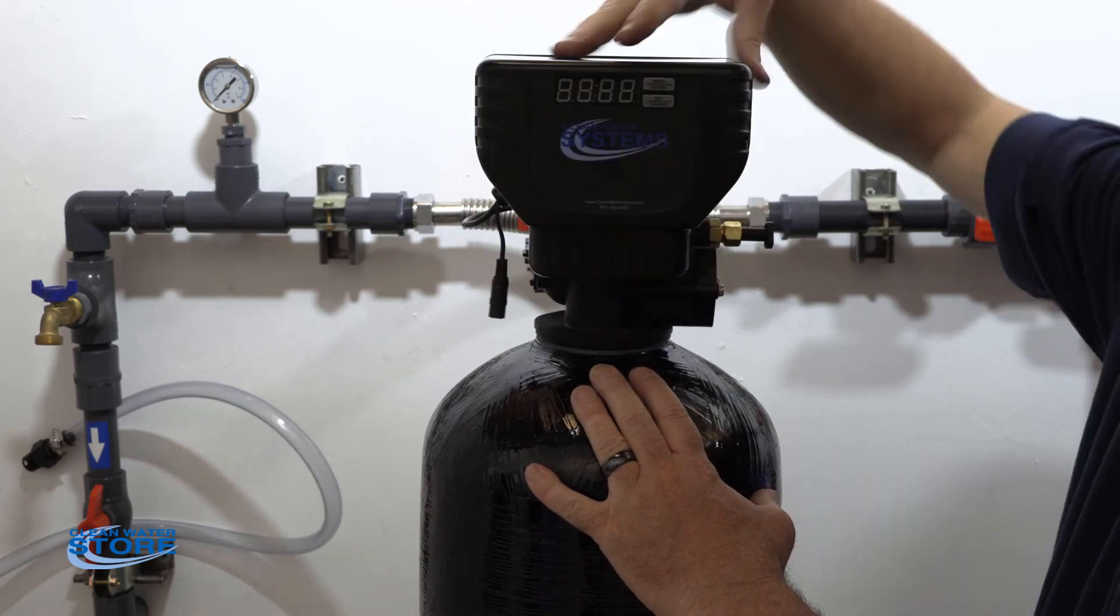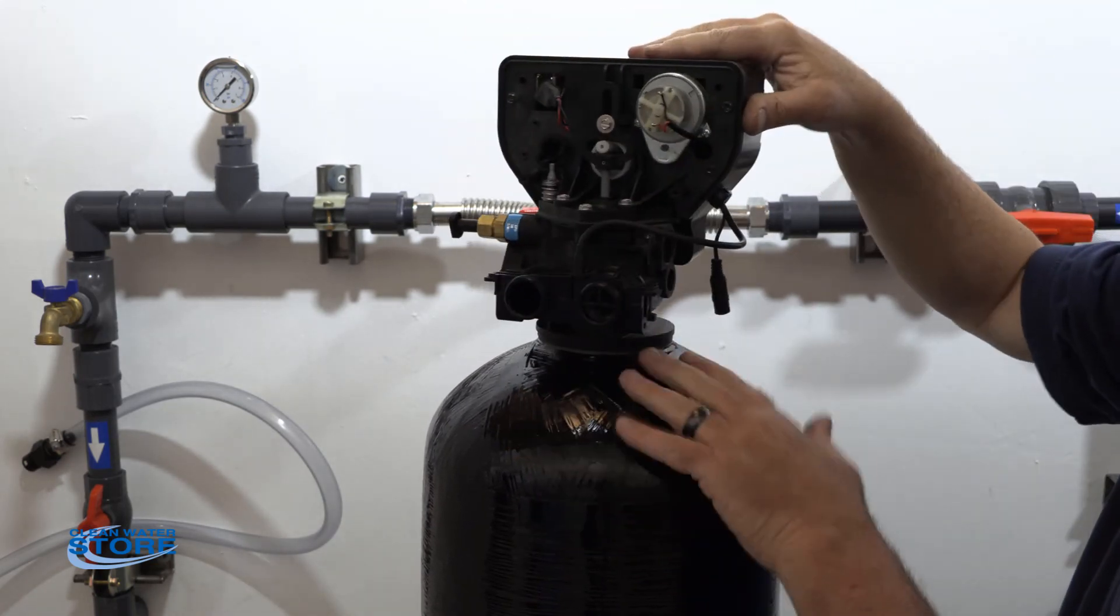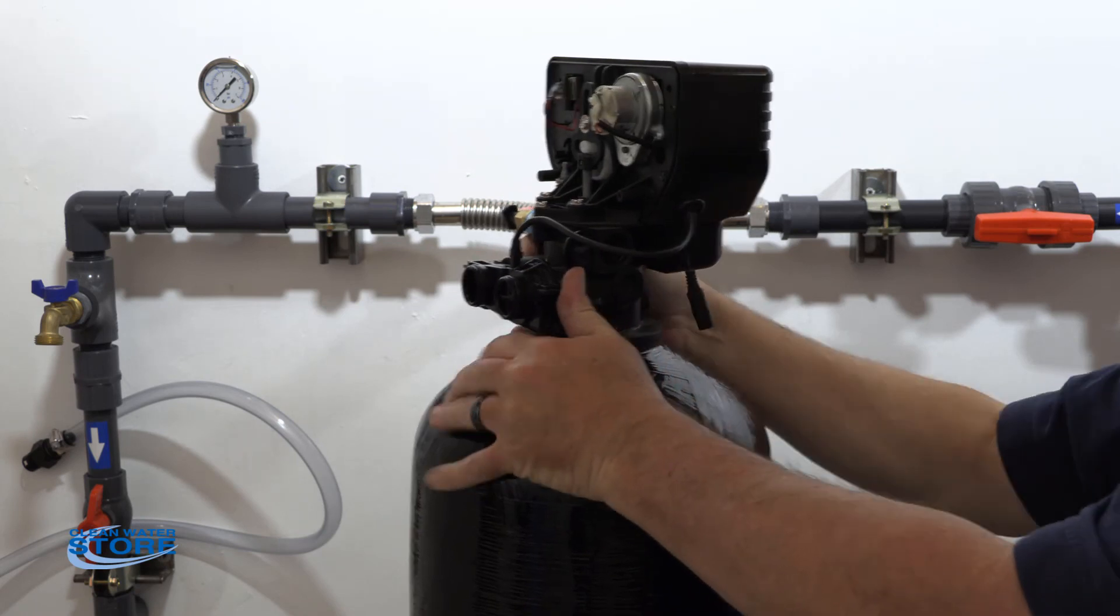Again, hand tight. You want to get the O-ring sealed, but you don't want to crack the valve body and you don't want to crack the tank. So just give it a good tightening.